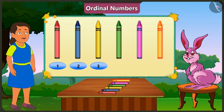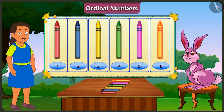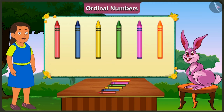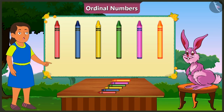Look Bubbly, there are a total of 6 crayons here. When we need to know the position of something, we don't have to count them all. I did not understand Bunny. Okay, let me explain.